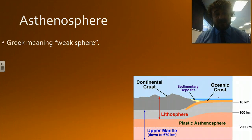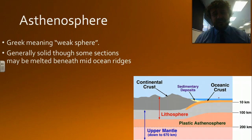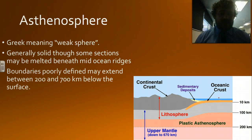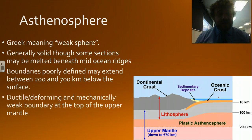The asthenosphere means weak sphere. It's solid. There are some molten bits like underneath the mid-oceanic ridges and that's where lava comes up. Poorly defined boundaries, but it tends to be between 200 and 700 kilometers below the surface. It's ductile, which means it can be stretched and mechanically weak, so it can be stretched according to what the layers inside of it are doing. It's at the top of the upper mantle.